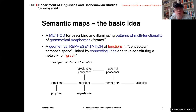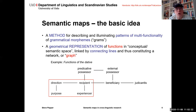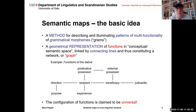Here we have an example showing the functions of the dative — eight different functions in total. The ones in the bottom left corner are the four we remember from the English example: direction, recipient, experiencer, and purpose. The other four come from research into other languages. The key point is that the configuration of functions is claimed to be universal.